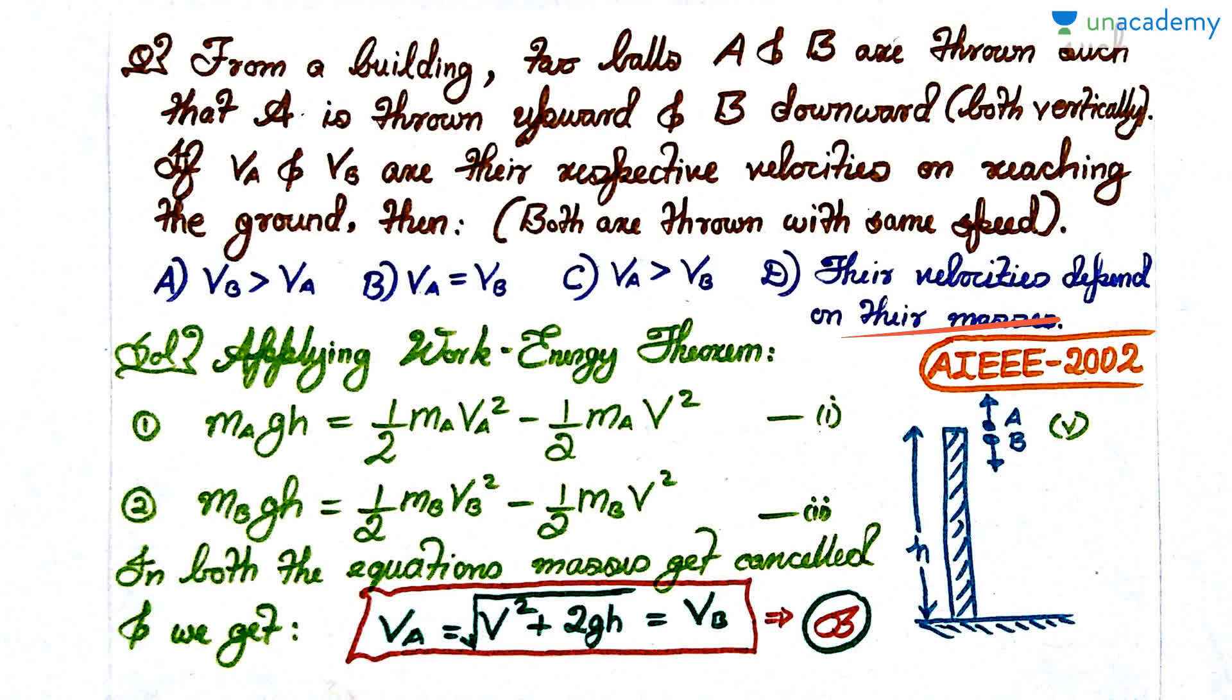I hope that you have attempted the question. As usual, we'll apply the work energy theorem, the one theorem from which you can solve most of the questions if not all of the questions. The A particle was thrown upward like this and the B particle was thrown downward like this, both were thrown with the same velocity V.